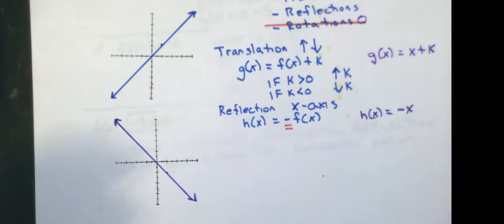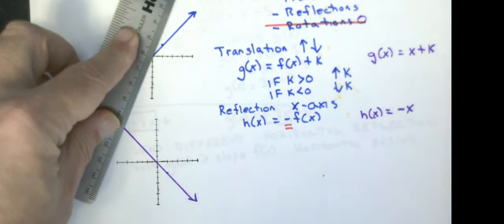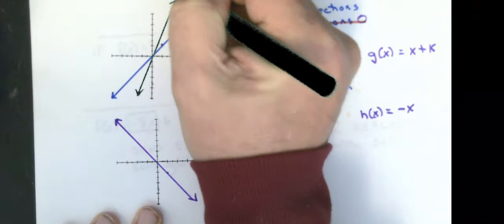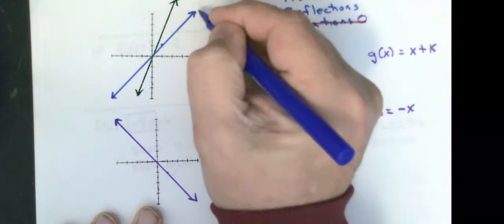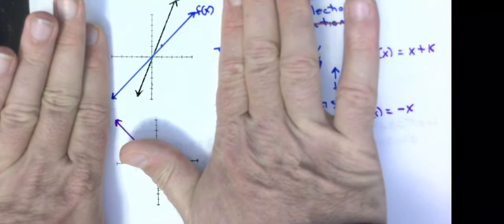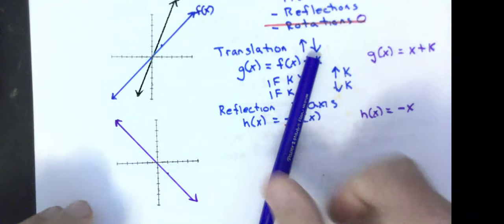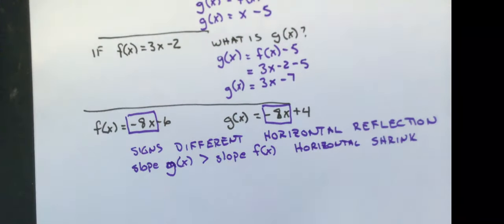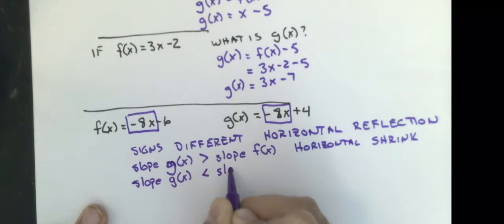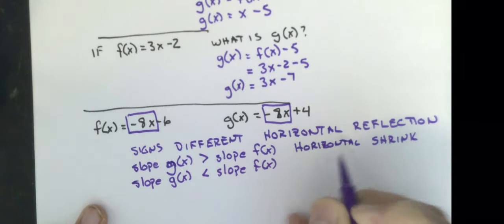If the slope of g(x), that's that number that's in front, is bigger than the slope of f(x), that is going to be a horizontal shrink. We call it a horizontal shrink because it looks like I just took the graph and I squished it horizontally and pushed it into that new line.